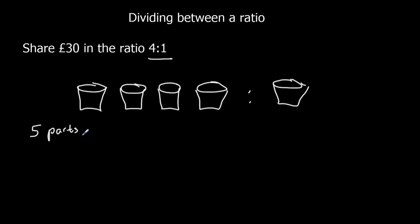So sharing is the same as dividing. So 30 shared equally between 5. 30 pounds divided by 5, that's 6 pounds. So in each of the cups, we're going to have 6 pounds.